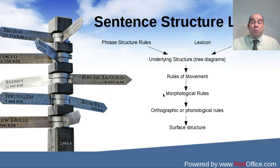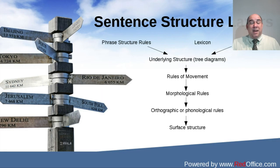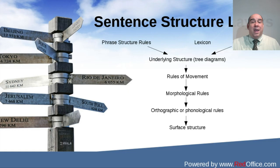There are morphological rules — morphemes that we have to add in order to make the meaning understood. That's why we can take a noun and make it an adjective, or take an adjective and make it a noun or a verb, because we're adding these morphemes along the way.